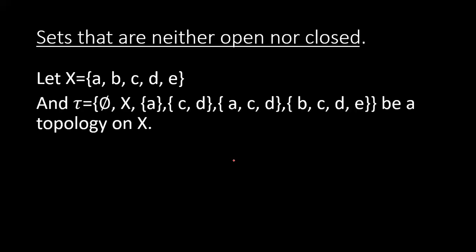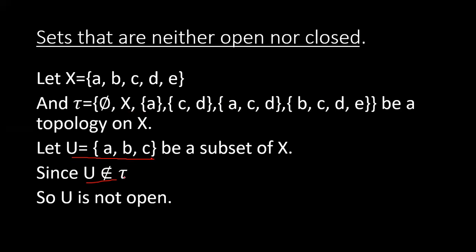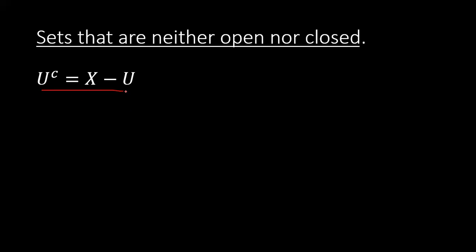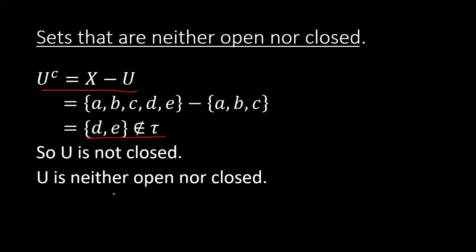Now we discuss sets that are neither open nor closed. Let X = {a, b, c, d, e} with topology τ = {φ, X, {a}, {c,d}, {a,c,d}, {b,c,d,e}}, and consider the subset U = {a, b, c}. First, U does not belong to τ, so it is not open. Then we check the complement: X minus U = {d, e}, and {d, e} does not belong to τ either, so U is not closed. Therefore U is neither open nor closed.